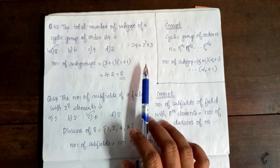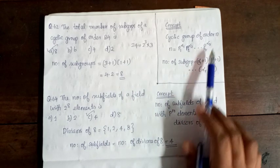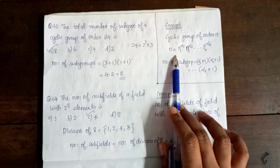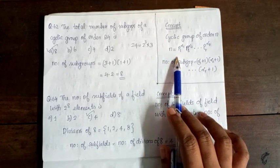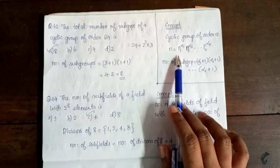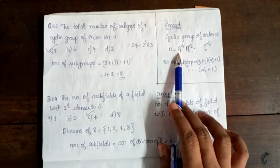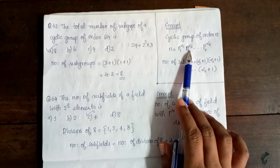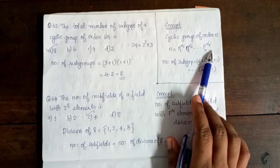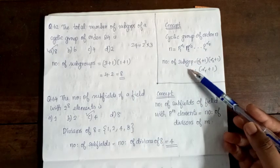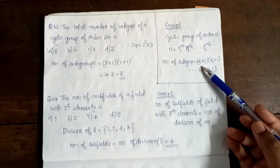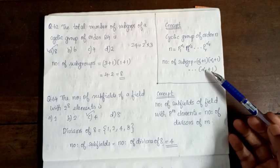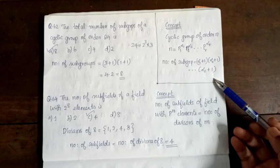For a cyclic group of order n, where n = p1^α1 · p2^α2 · ... · pr^αr, the number of subgroups is (α1 + 1)(α2 + 1)···(αr + 1). Since 24 = 2³ × 3, the number of subgroups is (3 + 1)(1 + 1) = 4 × 2 = 8.